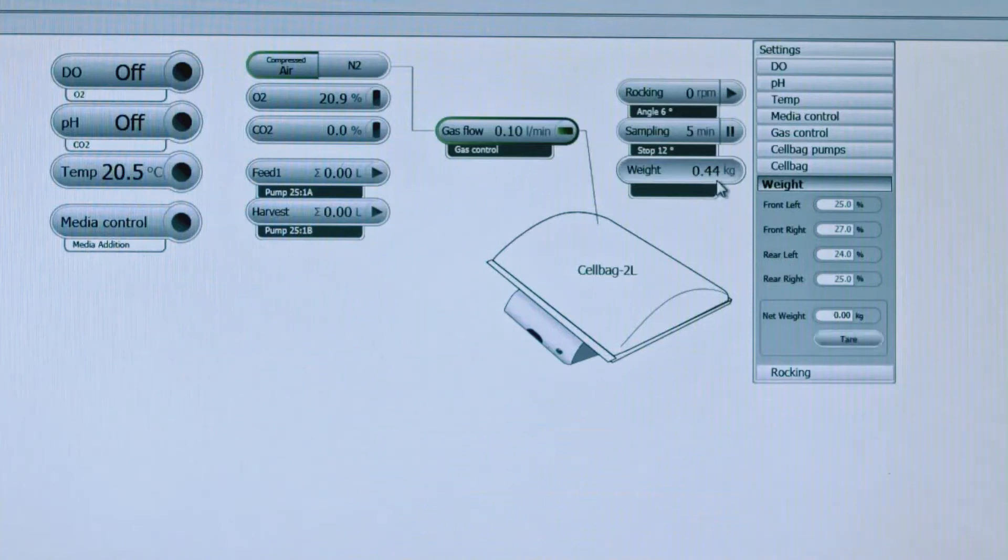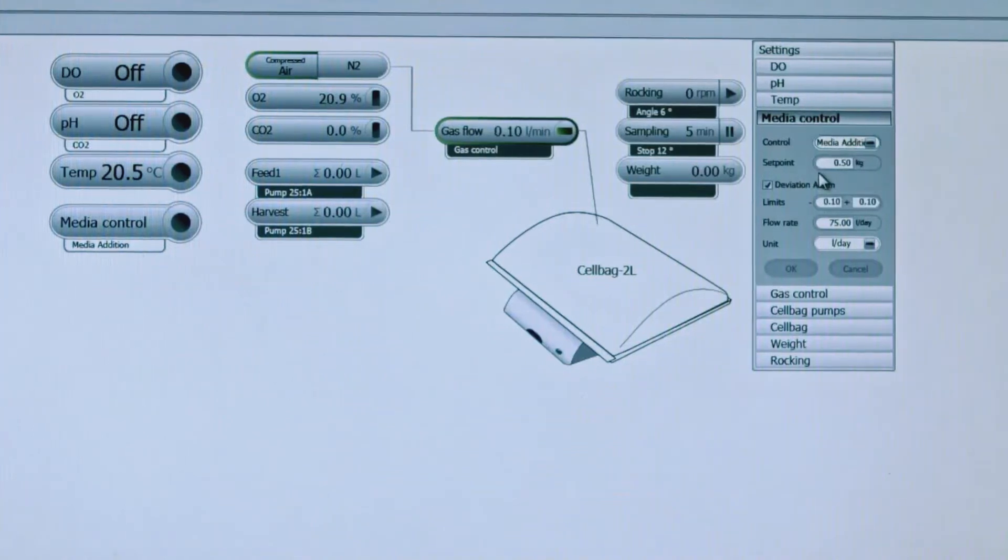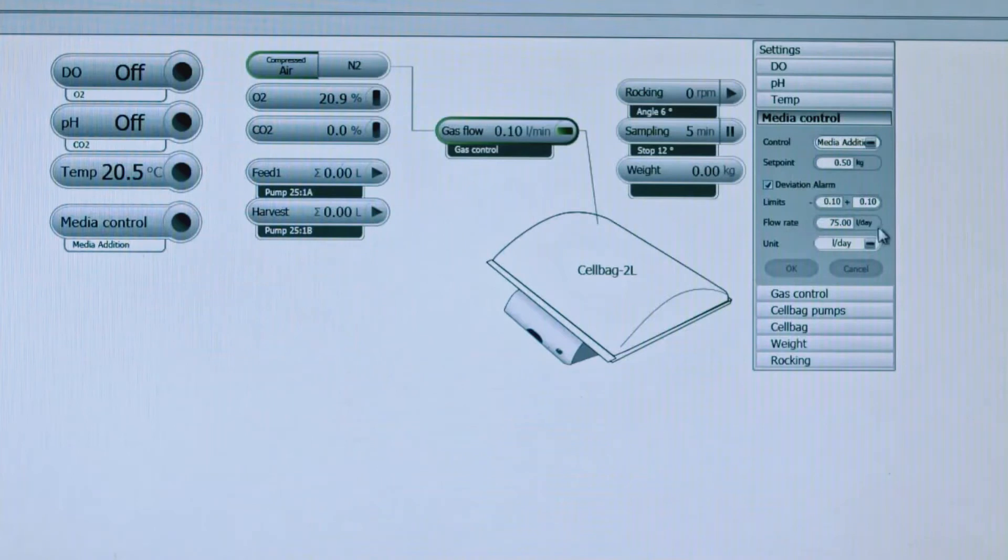You'll have your control set to media addition and set point to however much volume of media you would like to add into the bag. Right now we're saying it's 0.5 kilograms, which equals 500 mils. We're showing deviation alarms and a flow rate of 75 liters per day. To start that, you'll click on here and this will turn green and you'll see the pumps turn on. That will show that the feed pump here, this triangle is going in a circle and that tells you that the feed pump is on and the media will start flowing into the cell bag.